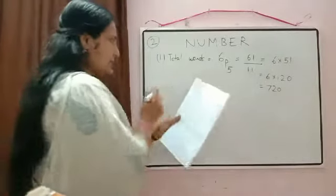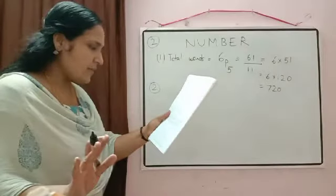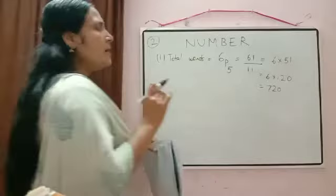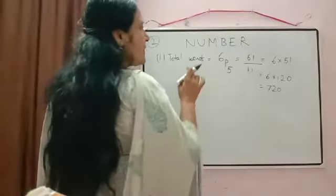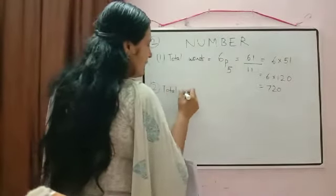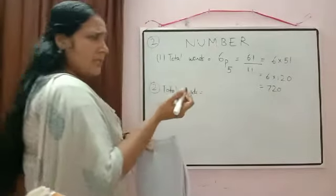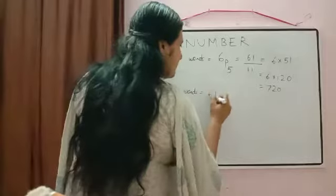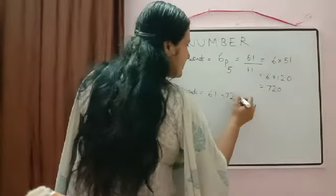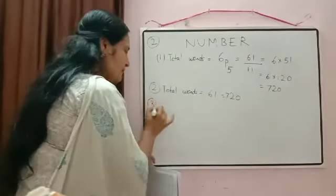Second condition: all letters are used. Six letters arranged using all six = 6! = 720.